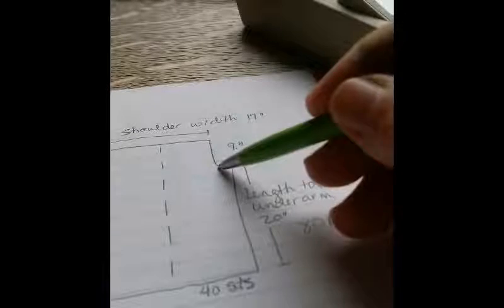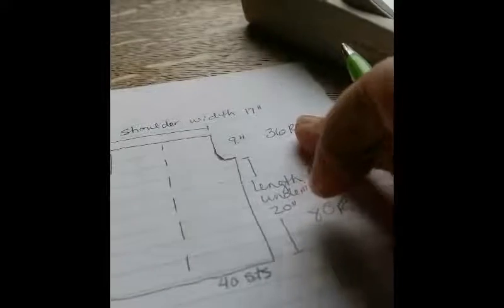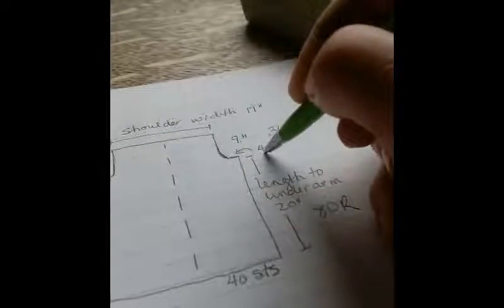So we're going to knit to the underarm. Bind off or decrease a few stitches. Then do some decreasing one stitch at a time, which makes this curvy shape. It's really a diagonal, but it functions as a curve. And then knit straight to the shoulder. Fatima bound off 4 stitches to begin with. That will work quite well for most.